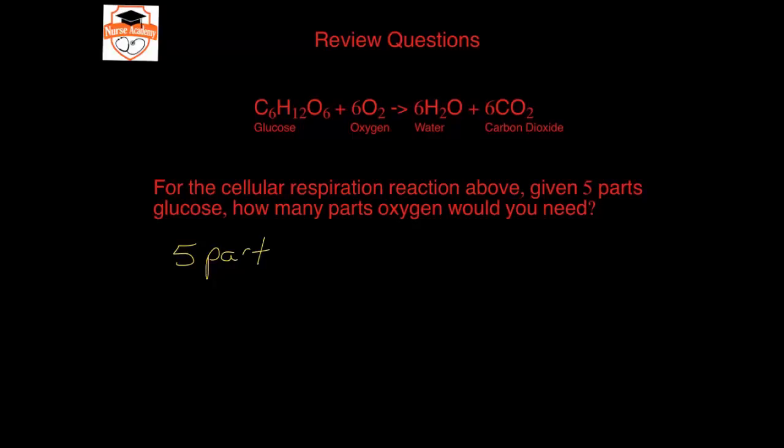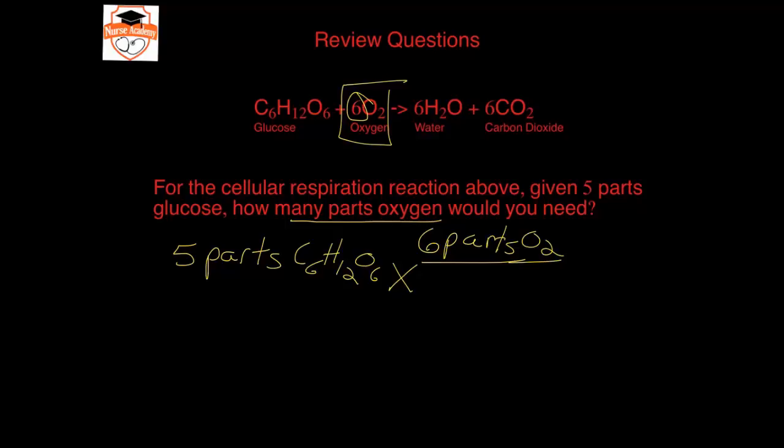So here we're going to start with our given: five parts of C6H12O6 and I'm going to put on top what they're asking for, so they're asking for parts of oxygen so I'm going to need that number, 6 parts O2. And then on the bottom I need to get rid of the parts of glucose and it's one part glucose reacts with six parts oxygen, so here I'll put one part glucose or C6H12O6. And in order to solve this I will take five times six divided by one. Five times six is thirty so it's thirty parts O2 are needed.